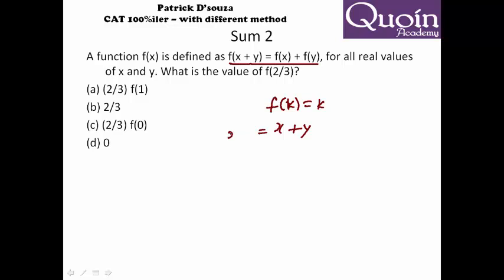So that means f(2/3) has to be equal to 2/3. Now we look at the options, so we can eliminate option D. We can also eliminate option C because f(0) will be zero. Two upon three times zero will be zero. Option B is possible, even option A is possible, because f(1) is one. One into 2/3 will be 2/3.